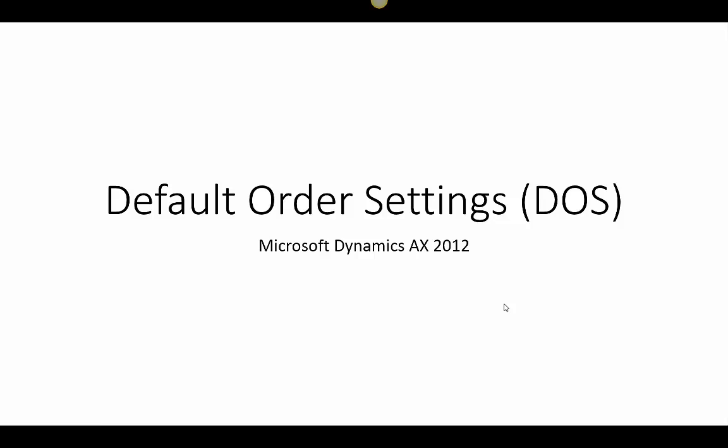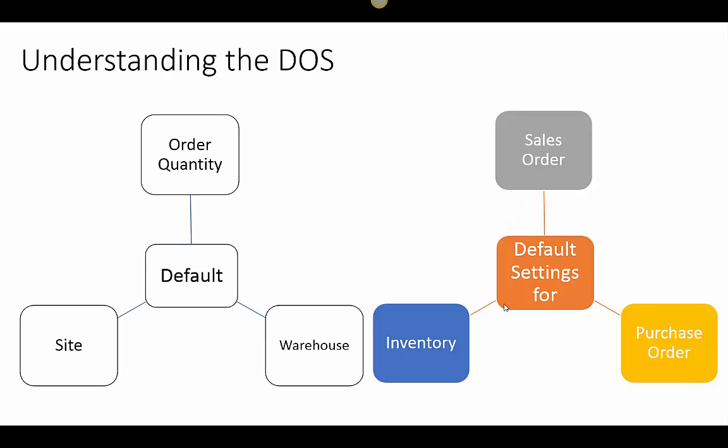In this video we will review the default order settings in Microsoft Dynamics AX 2012. Users can set up default order settings for example site, warehouse, and order quantity for sales orders, purchase orders, and for inventory, where inventory includes production orders and inventory journals. In this demonstration we will consider the default inventory settings as default production order settings to simplify the explanation.